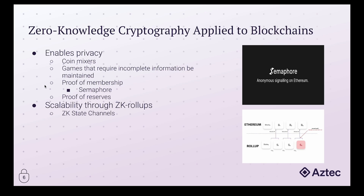That wraps up some of the common privacy applications. Looking at scalability, with zero-knowledge proofs you're able to verify a proof and determine its validity without knowing the underlying components. One exciting application is implementing them with rollups — a way of bundling many transactions on a layer two and submitting them to a layer one such as Ethereum. Through zero knowledge, you don't have to look at what those underlying transactions are; you're able to compute a proof to determine the validity of the transactions and then submit them on-chain. The alternative would be an optimistic rollup, where you hope in good faith that all transactions are valid and rely on someone to dispute invalid ones — but with a zero-knowledge proof, there's elimination of that uncertainty.